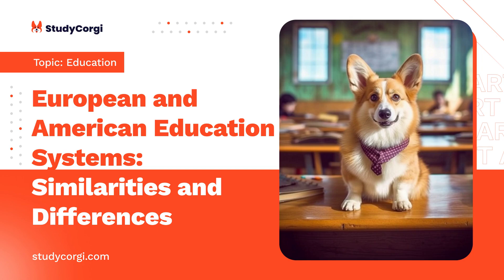The United States education system has retained its superior quality for decades. In 1989, White and Ahrens compared two aspects of education systems — mass education and general education — between the United States and Europe. They established that the United States education system was superior to the European education system, and the United States has maintained that standard to date against Europe.